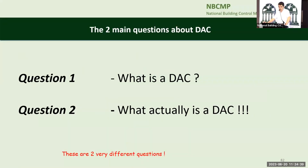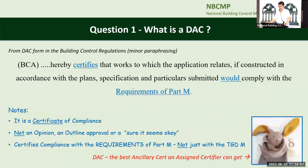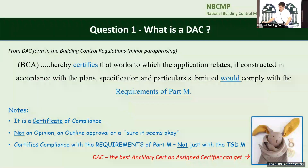There were two questions. The first was: what's a DAC? The second, which is a very different question, is: what actually is a DAC? From the DAC certificate itself, the Building Control Authority hereby certifies that the works to which the application relates, if constructed in accordance with the plans, specifications, and particulars, would comply with the requirements of Part M. The key thing to note is it's a certificate of compliance — not an opinion, not an outline approval, not 'that looks okay to me.' It's a certificate, so it has to be right. And it certifies compliance with the requirements of Part M, not with the technical guidance document.